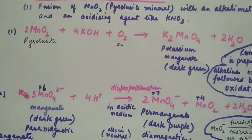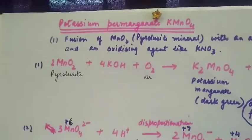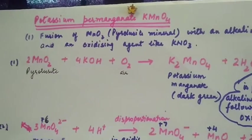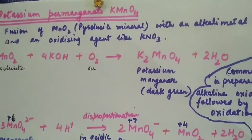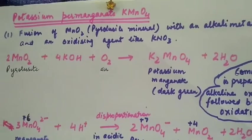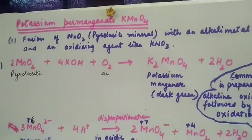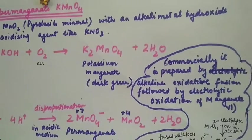In the first step, we fuse manganese dioxide with alkali in the presence of air. This reaction is called alkaline oxidative fusion to give potassium manganate, which is a green mass.